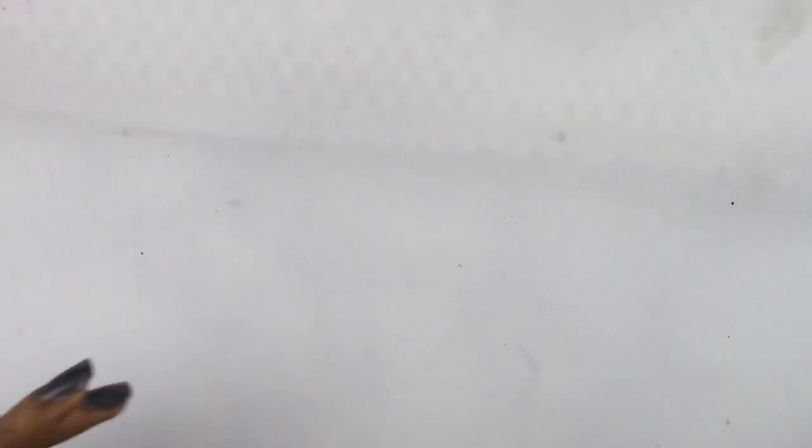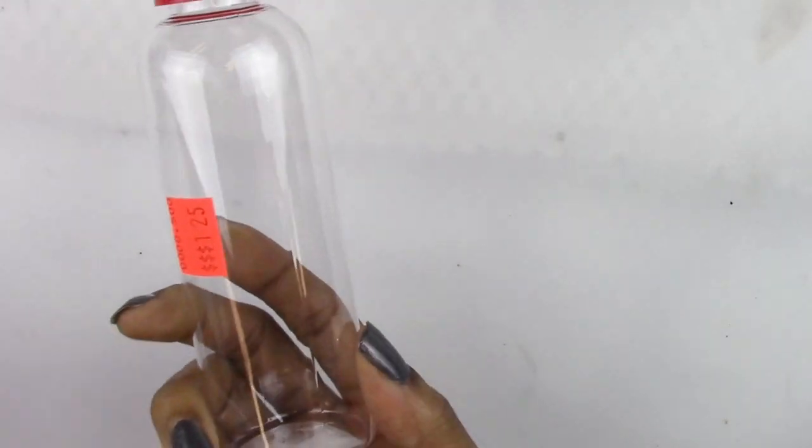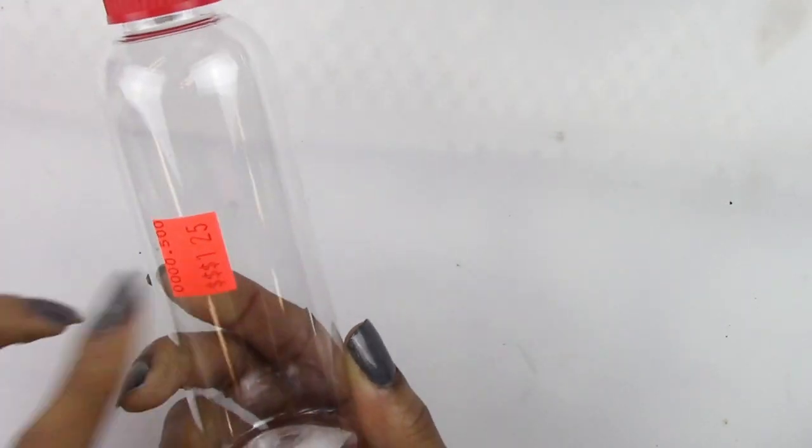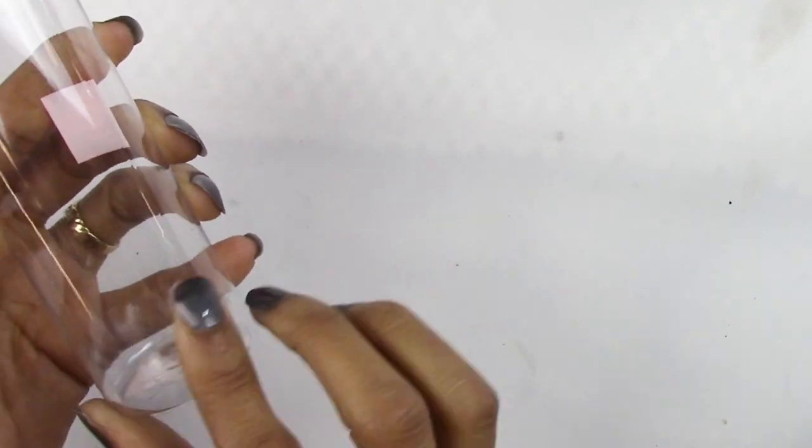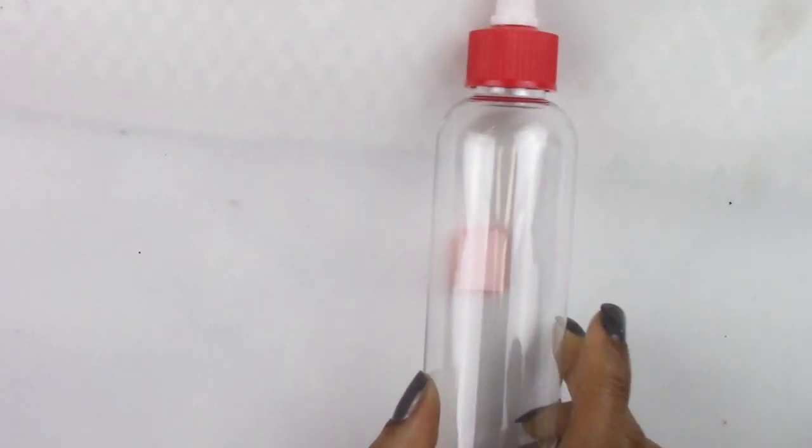I'm just going to show y'all quick what you need. You need an empty container like this, a dollar twenty-five with this kind of screw-off lid. Make sure that you label it brush cleaner.